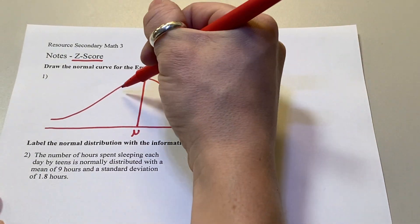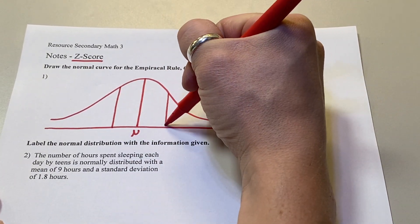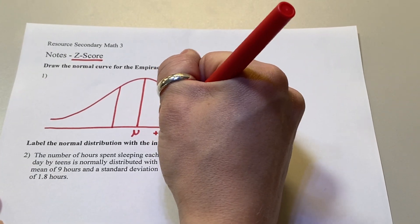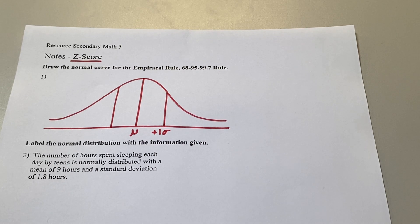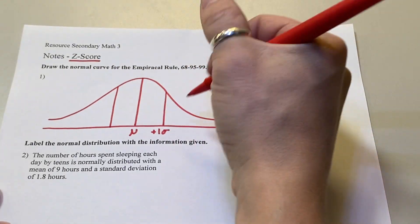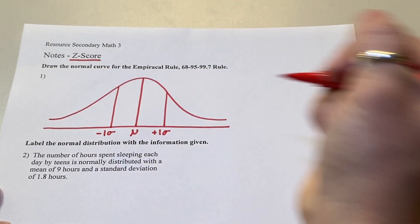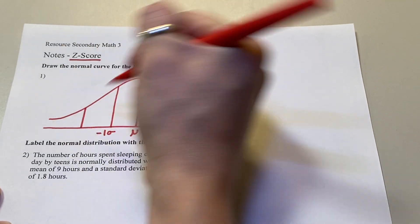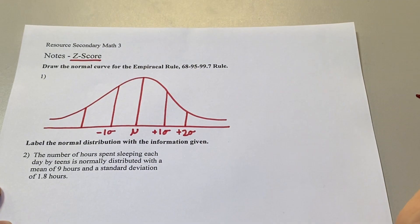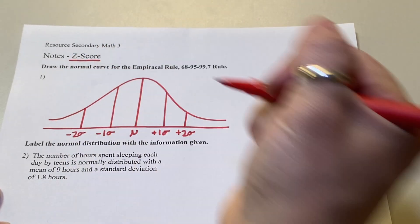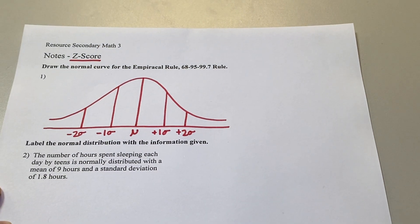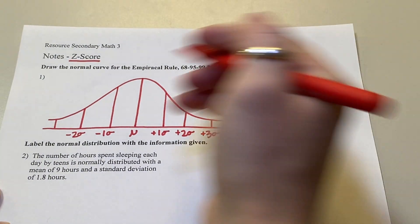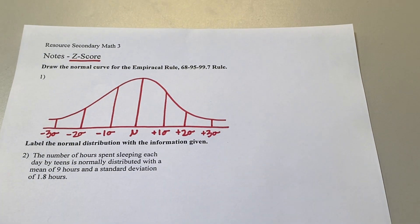Then we have one standard deviation on both sides. Going to the right, you're adding one standard deviation — remember, the standard deviation is that little sigma symbol. Going to the left, you're subtracting one standard deviation. Within two standard deviations we draw our next line: adding two to the right, subtracting two to the left. Then our last lines are plus three and minus three standard deviations.